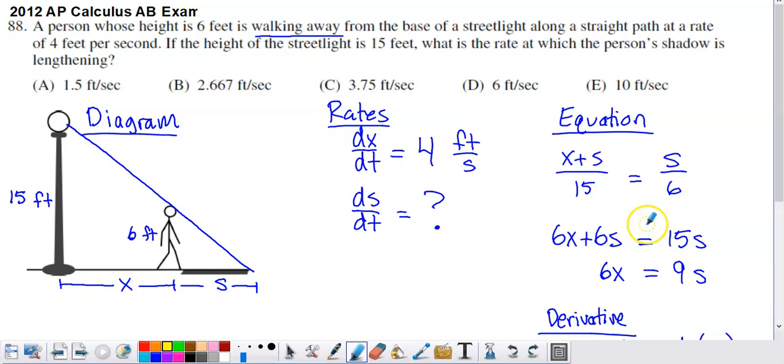I don't necessarily want to take the derivative of this equation in the form that I produced it in. So what I did is I cross-multiplied, multiplied the S by the 15, distributed 6 into that numerator, and then I saw I could also combine like terms across the equal sign.